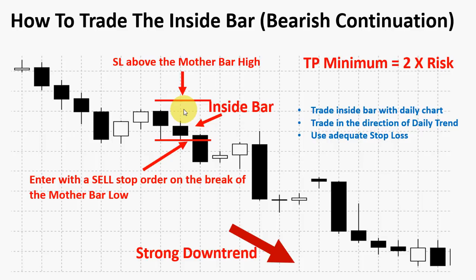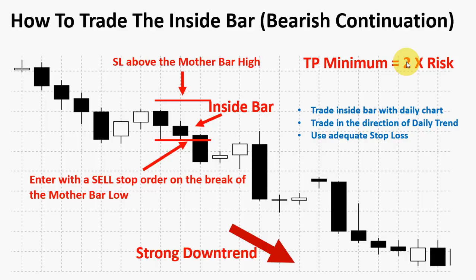What about the take profit? Very simple — take profit should be done with a risk-reward ratio that suits you. You might want to decide your risk-to-reward ratio should be 1:2; someone might say they want 1:3 or 1:5. So if your stop loss is 20 pips and your risk-reward is 1:2, your take profit will be 40 pips. If your stop loss was 30 pips and risk-reward is 1:2, your take profit would be 60 pips, and so on. But remember, you must trade in the direction of the trend and use a higher timeframe. This is how to trade the inside bar bearish continuation.